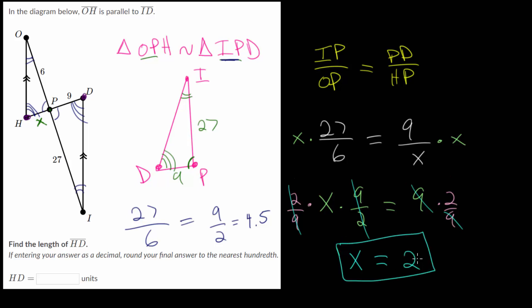And this should make sense, because if we take 2 and we multiply it by 4.5, we do get 9. And we do know 4.5 is in fact the proportionality constant.